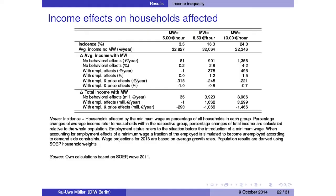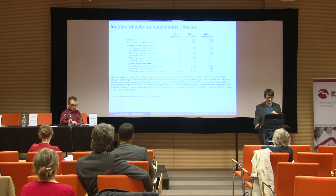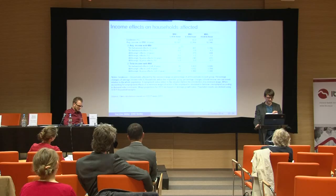Now let's look at the effects on disposable household incomes. At the household level, the incidence rate shows: a minimum wage of €5 would only affect about 3.5% of households in Germany; significantly more — over 15% — when set at €8.50; and almost 25% with a minimum wage of €10 per hour.